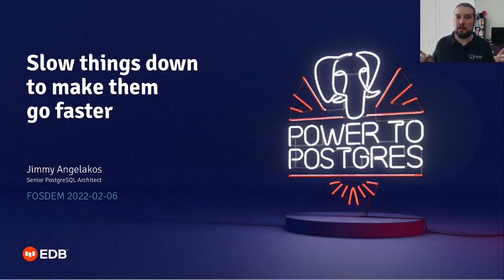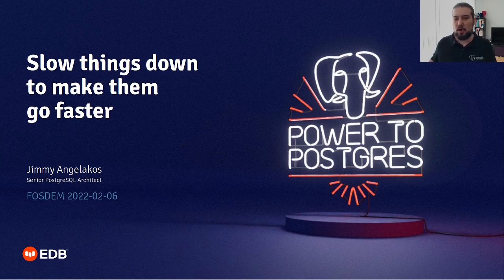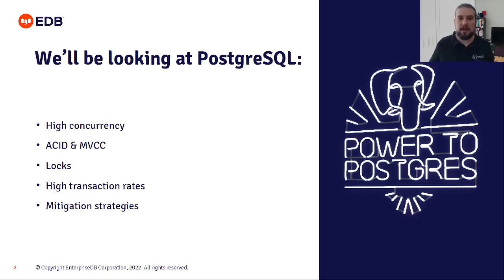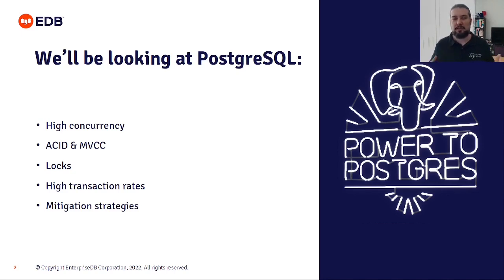Hello, FOSDEM, and welcome to my talk: Slow Things Down to Make Them Go Faster. My name is Jimmy. I'm a senior Postgres architect at EDB. In this talk, we'll be looking at how you can overwhelm your Postgres system with simply workload, and what you can do to try to avoid that. We will be looking at high concurrency in Postgres, how Postgres does ACID and what MVCC means, examining locks, high transaction rates, and strategies to mitigate problems caused by large workloads on Postgres.